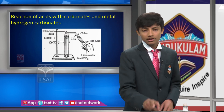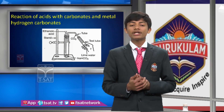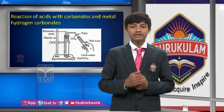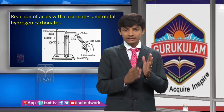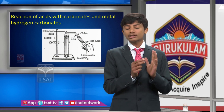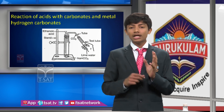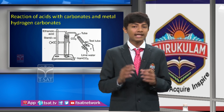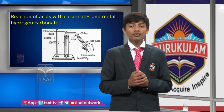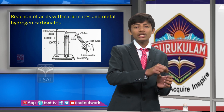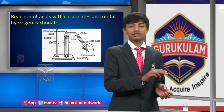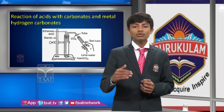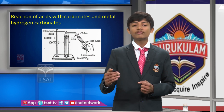Now I explain the reaction of acid with carbonates and metal hydrogen carbonates. The main aim is to show that when CO2 is liberated and enters calcium hydroxide, it forms a milky white precipitate. We take two test tubes — one with sodium carbonate (A) and one with sodium hydrogen carbonate (B) — add hydrochloric acid to both. The CO2 produced passes through a delivery tube into calcium hydroxide solution, forming a white precipitate.